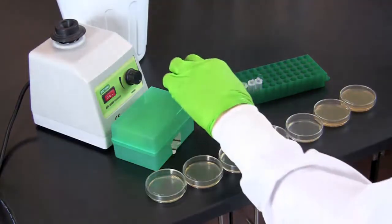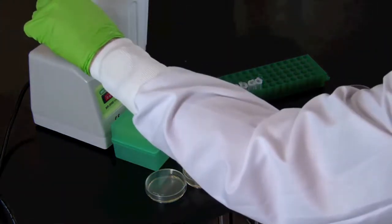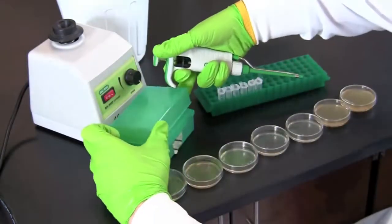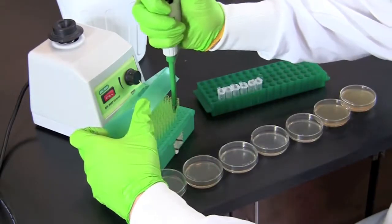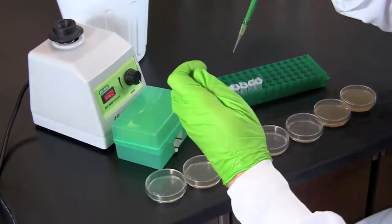Mix the diluted cell culture in the tube labeled 10 to the first, and using aseptic technique, pipette 100 microliters onto the LB agar plate labeled 10 to the first.